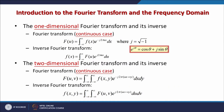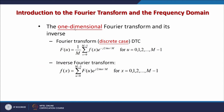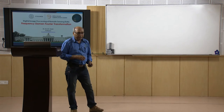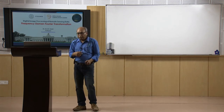The frequency domain refers to the plane of the two-dimensional discrete Fourier transform of an image. The purpose of the Fourier transform is to represent a signal as a linear combination of sinusoidal signals of various frequencies. Mathematically, different options are available: the one-dimensional Fourier transform and its inverse, and the two-dimensional Fourier transform and its inverse — both for the continuous case and the discrete case. There are various options available depending on the requirements of your filtering for the image.